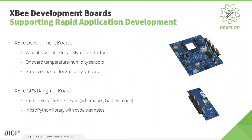Digi also provides hardware tools for evaluation and development of XBee products. Development boards are available for all XBee form factors, and the most recent board includes an onboard temperature and humidity sensor and connectors to add third-party sensors easily. This allows you to create full end-to-end IoT proof-of-concepts in a very short time frame. There is also an extension header on the board for adding custom add-on boards. As an example and reference, we have developed a GPS add-on board providing location data for applications, with complete design files and MicroPython source code to run on an XBee module.